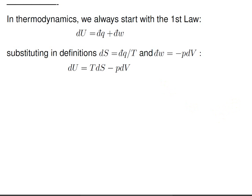Now we want to apply this to thermodynamics. I like to start with the first law: the derivative of internal energy equals the path derivative of heat plus the path derivative of work. Substituting in the definitions — from the second law, dq equals TdS — we replace dq with TdS. And the path derivative of work is minus pdV. So we have internal energy as dU equals TdS minus pdV, a very common starting point.